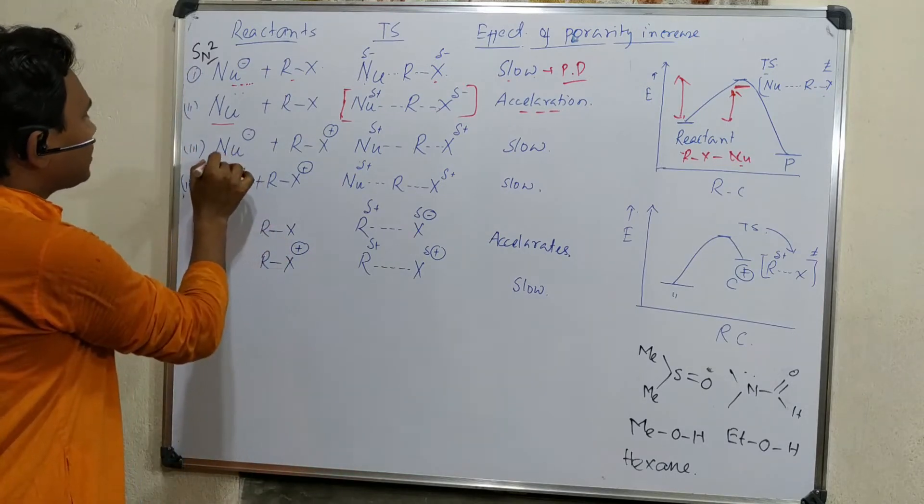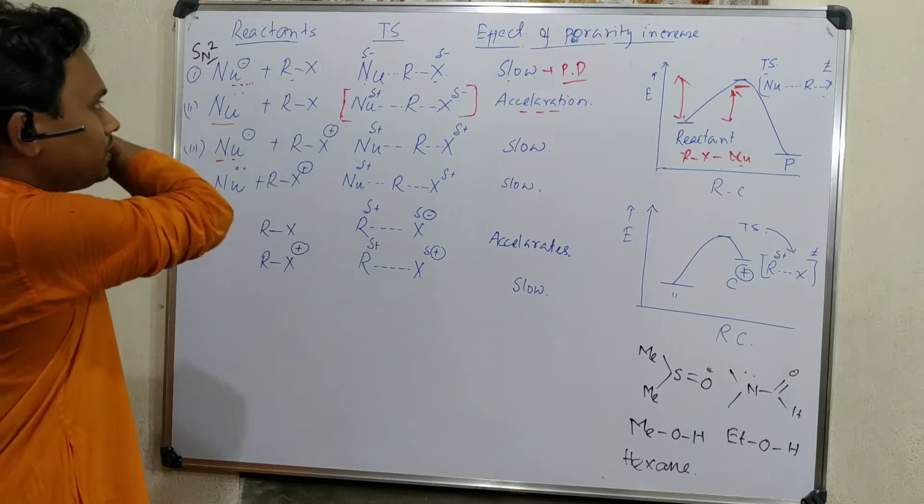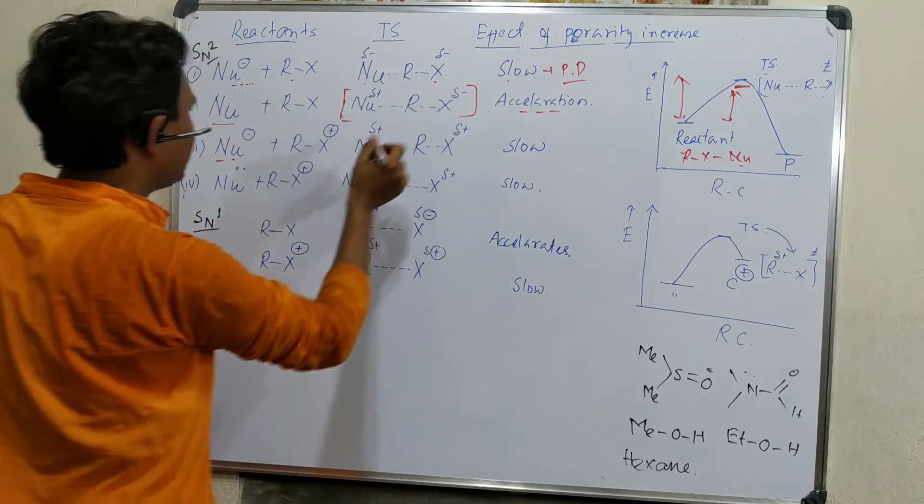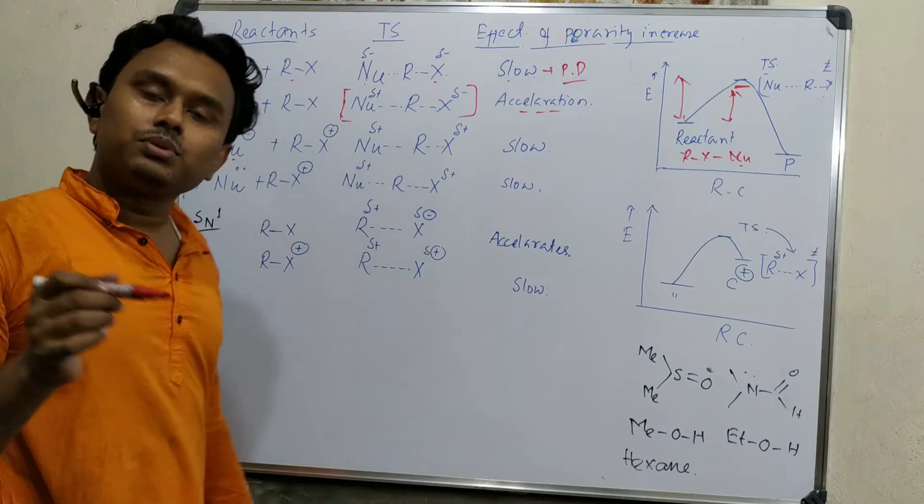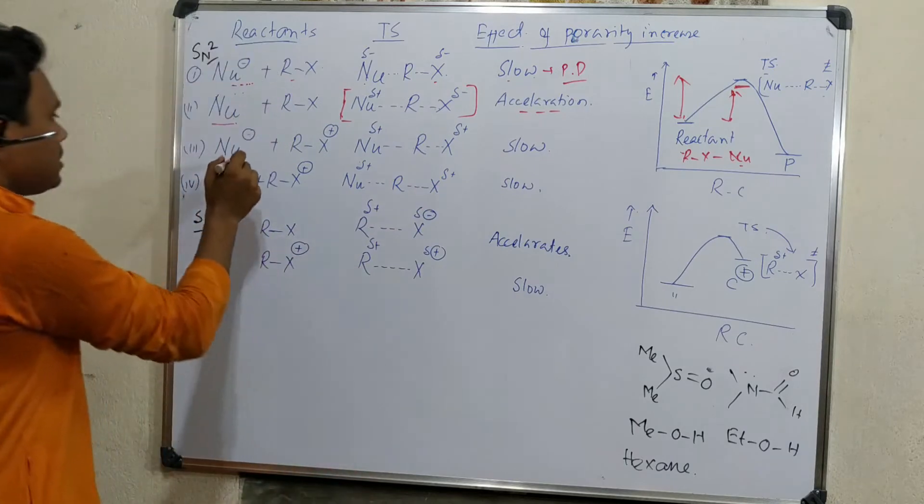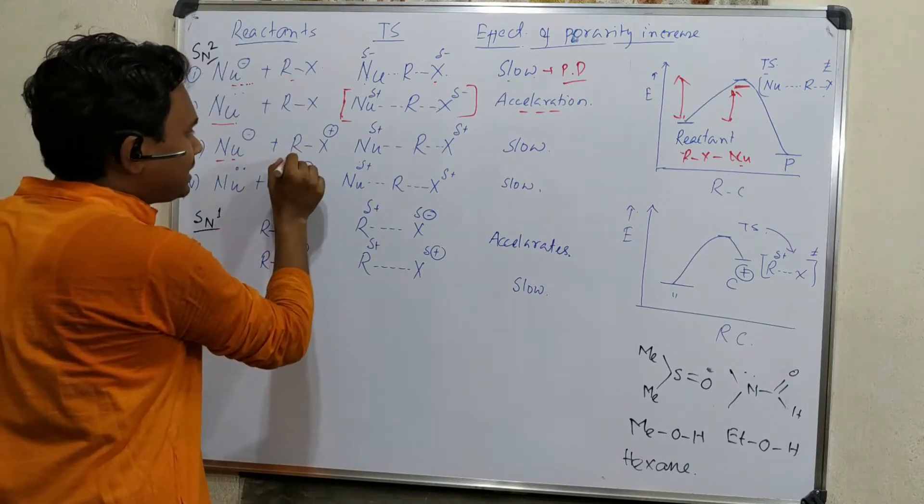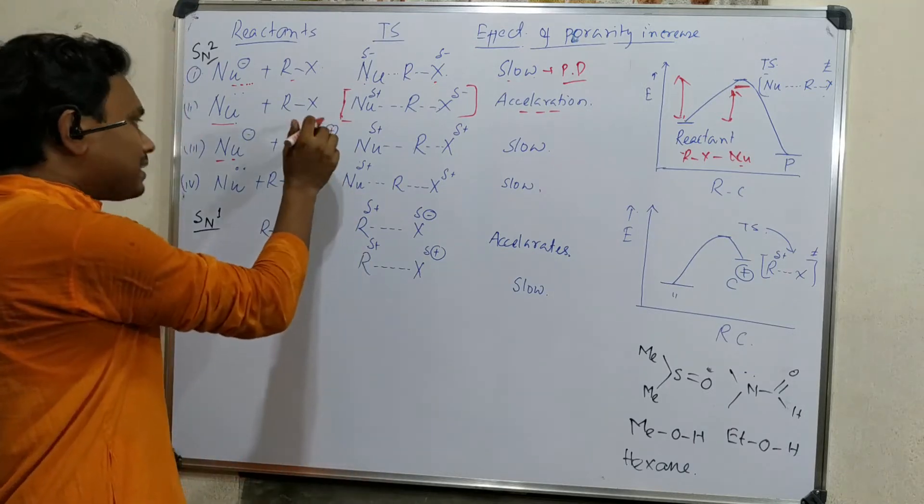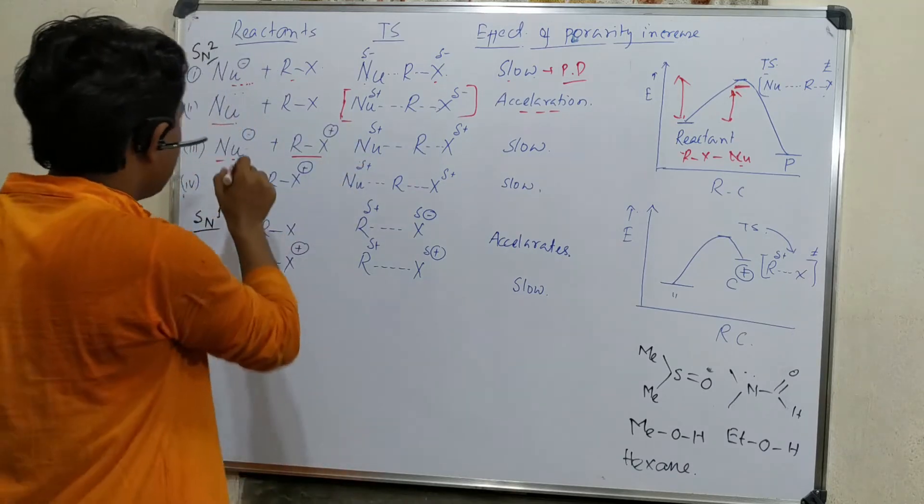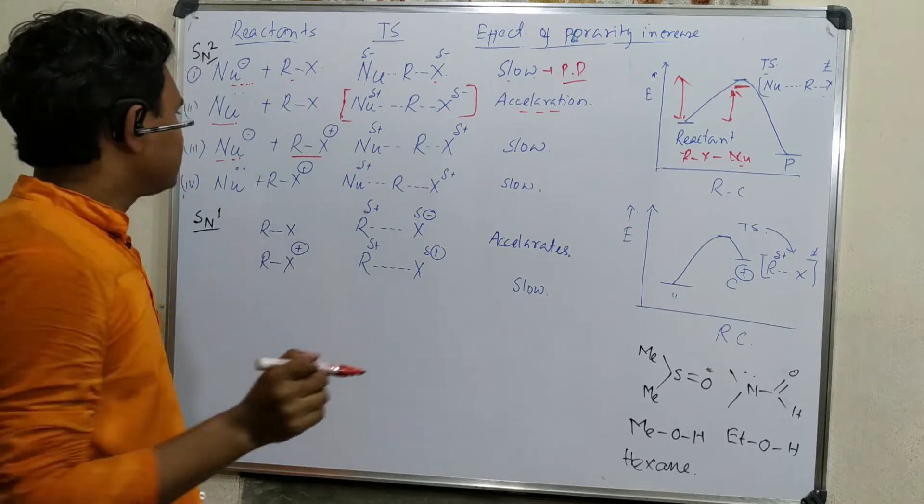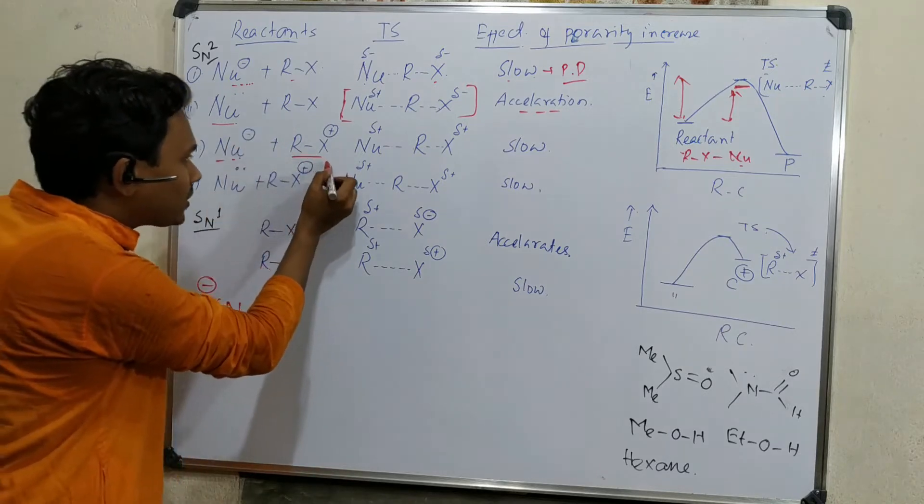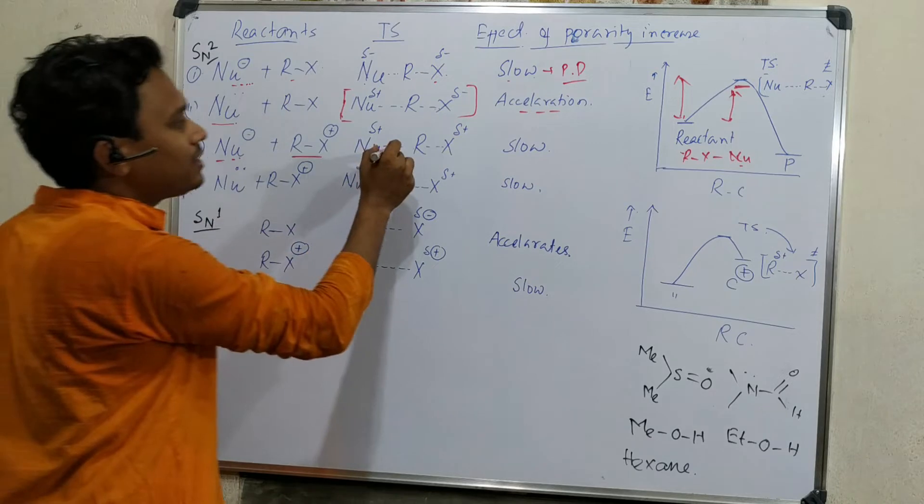Let me give you one example. You can consider this is cyanide. This nucleophile is neutral and you can consider as alkyl halide. So after when it becomes polar protic, then rate becomes slow.